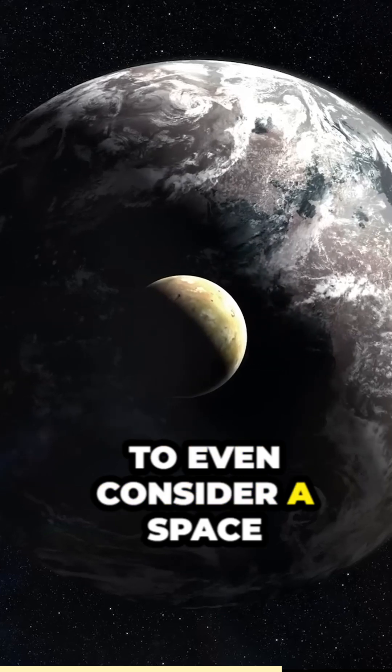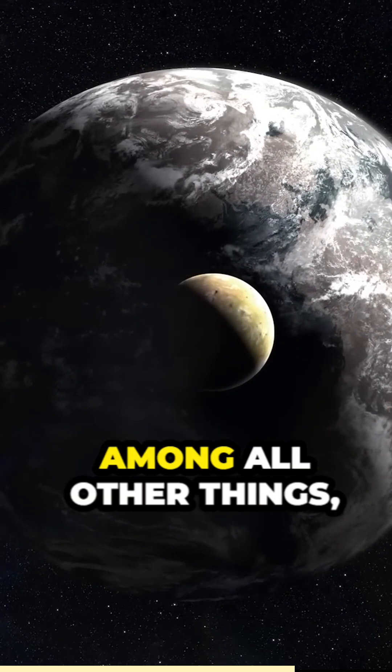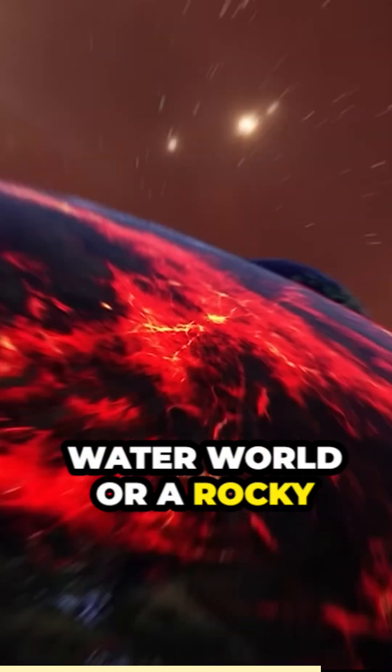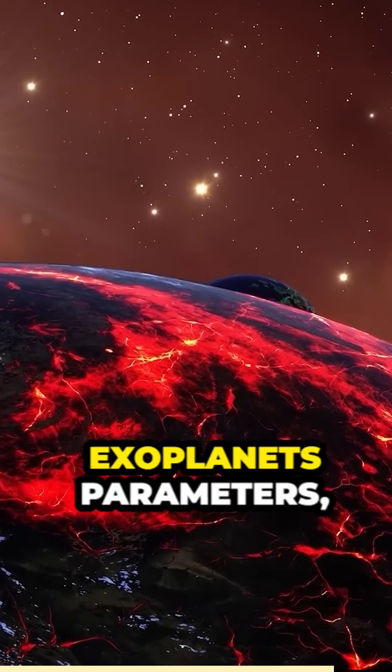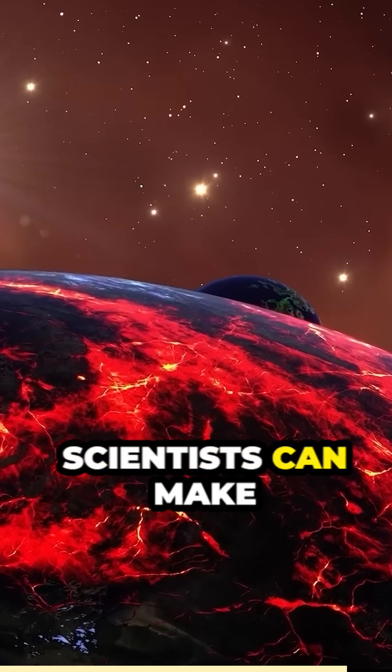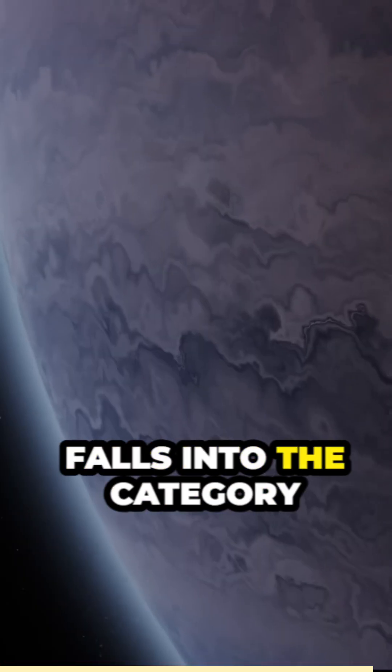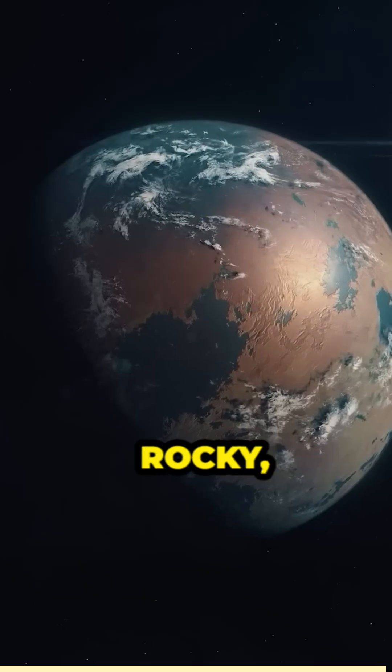To even consider a space object habitable, among all other things, it has to be either a water world or a rocky planet. By analyzing the exoplanet's parameters, scientists can make predictions about its composition, determining whether it falls into the category of a gaseous, rocky, or water world.